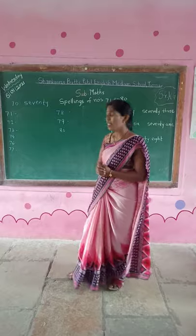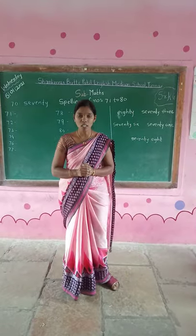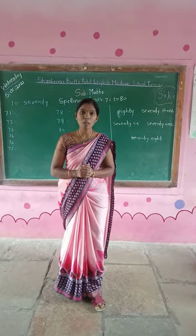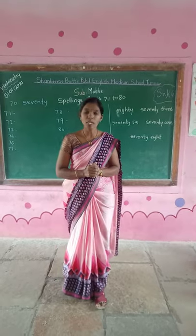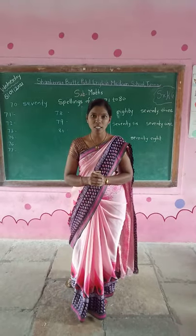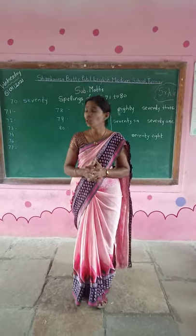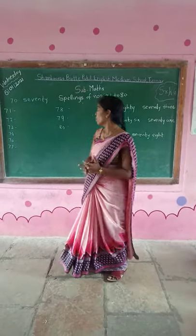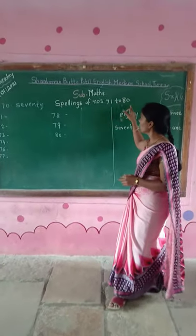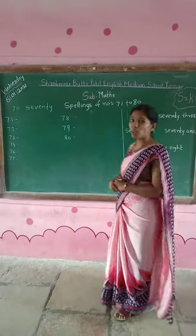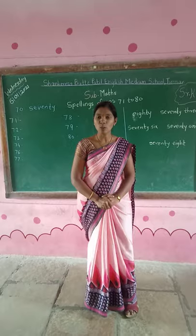So kids, in our math period we learn spellings of numbers. We already learned spellings from 1 up to 70. Today we are going to learn spellings of number 71 up to number 80, okay?